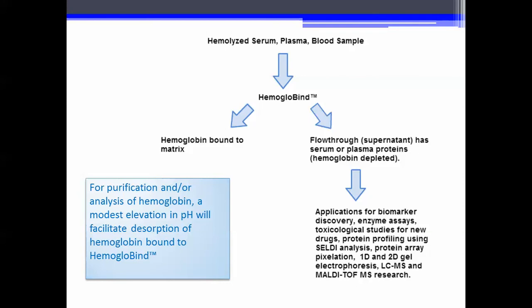For a hemolyzed serum or plasma blood sample, upon adding hemoglobin, the hemoglobin is bound to the matrix. For purification and/or analysis of hemoglobin, a modest elevation in pH will facilitate the desorption of hemoglobin bound to the resin. The flow-through supernatant contains serum or plasma proteins which are hemoglobin depleted.